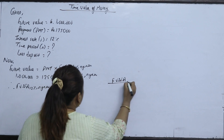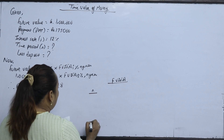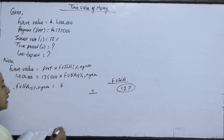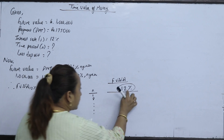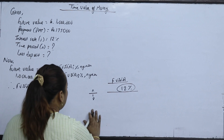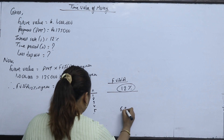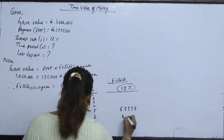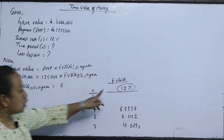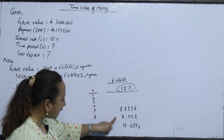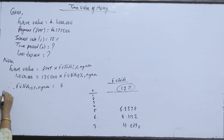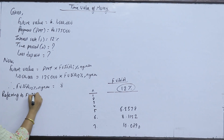We are looking at the FVIFA table. At 20 percent, we look at how many years. At 6 years, FVIFA at 6% is 8.1152; at 7% it is 10.0890. We are referring to the FVIFA table at 20 percent.